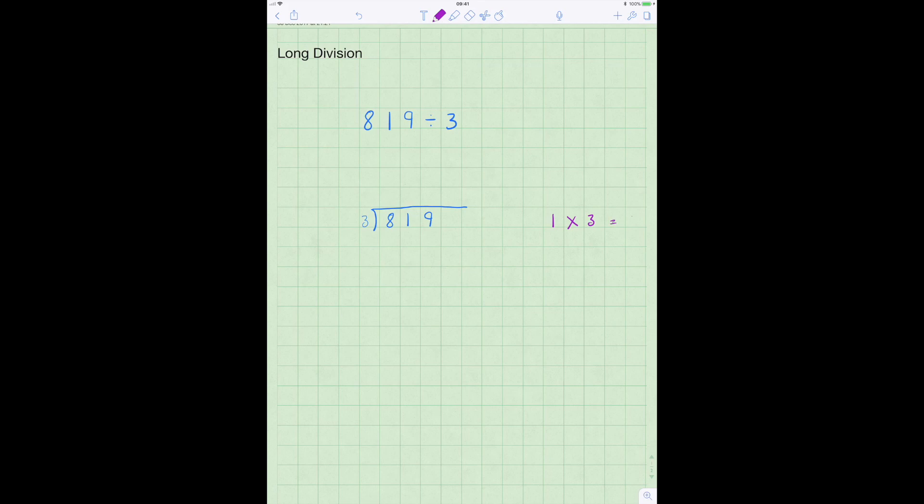So 1 times 3 equals 3, 2 times 3 equals 6, 3 times 3 equals 9, 4 times 3 equals 12 and so on. I won't complete all of this. We can add to it later on.